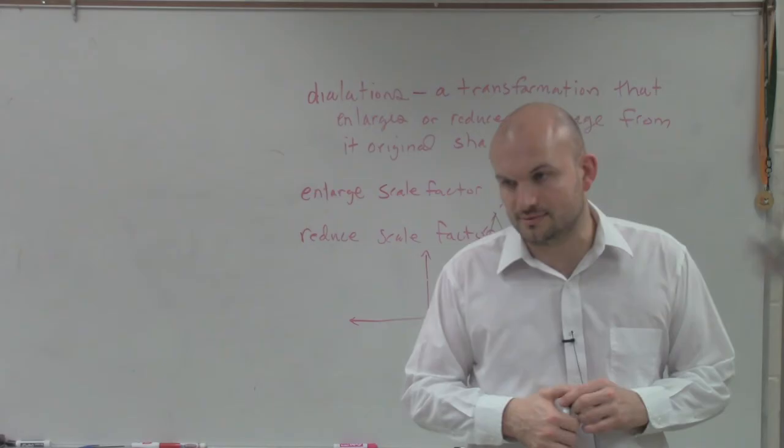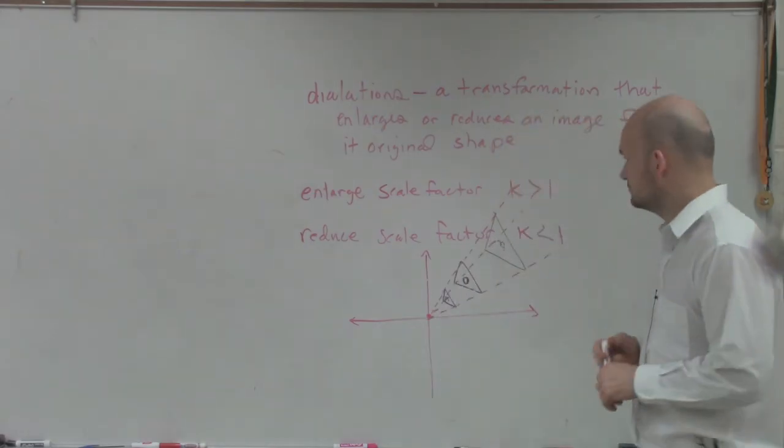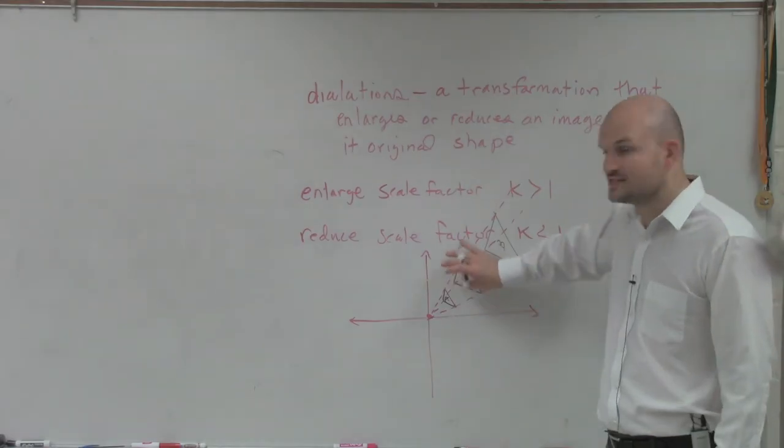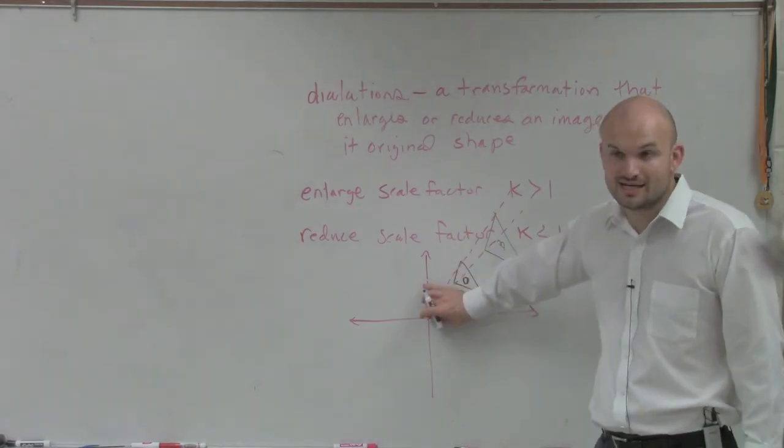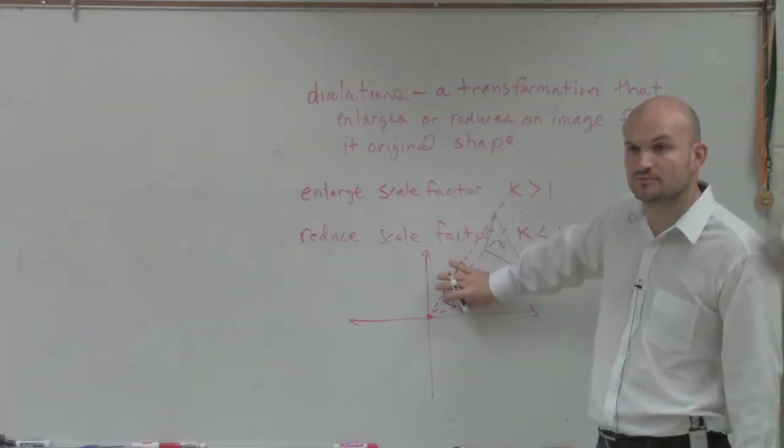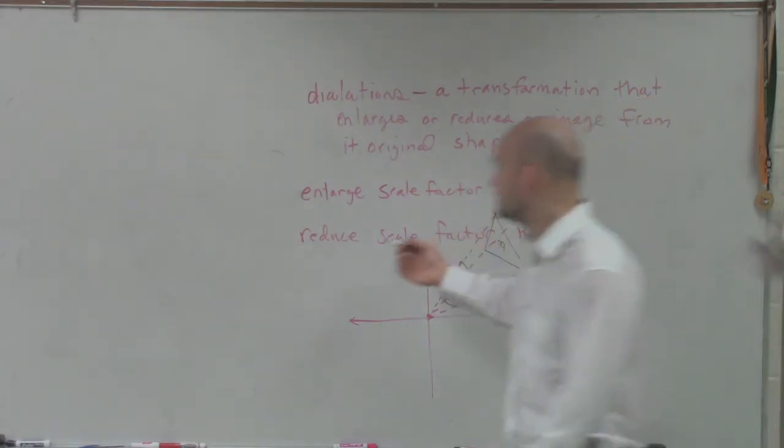Is that O triangle is 1? Is your original. That's like the original shape. So what we're doing is from this shape, we're either going to shrink it, reduce it, or we're going to enlarge it. But this is the original, right?